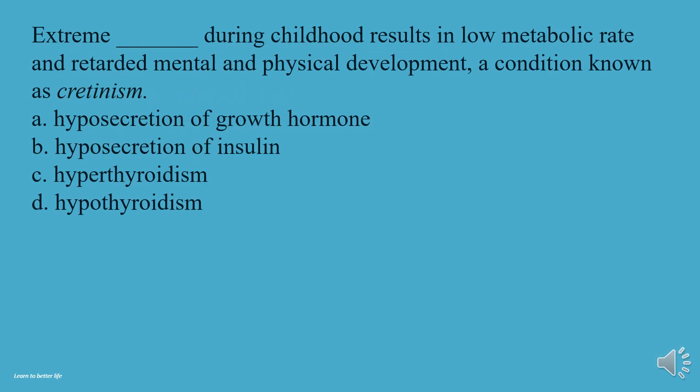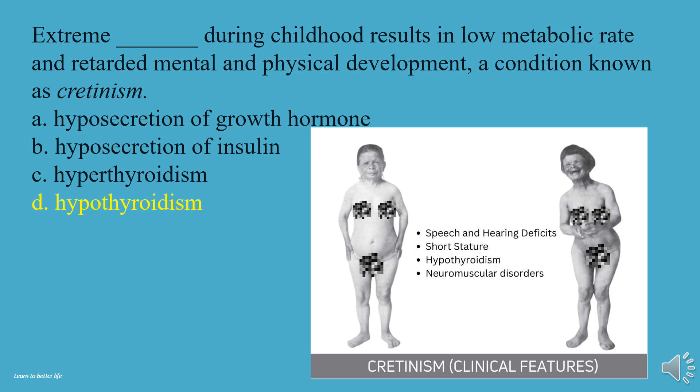Extreme what during childhood results in low metabolic rate and retarded mental and physical development, a condition known as cretinism? A, Hyposecretion of growth hormone. B, Hyposecretion of insulin. C, Hyperthyroidism. D, Hypothyroidism. The answer is D, Hypothyroidism.